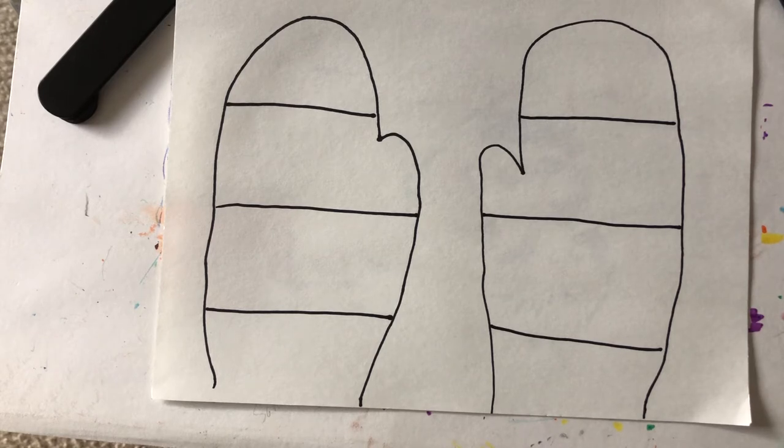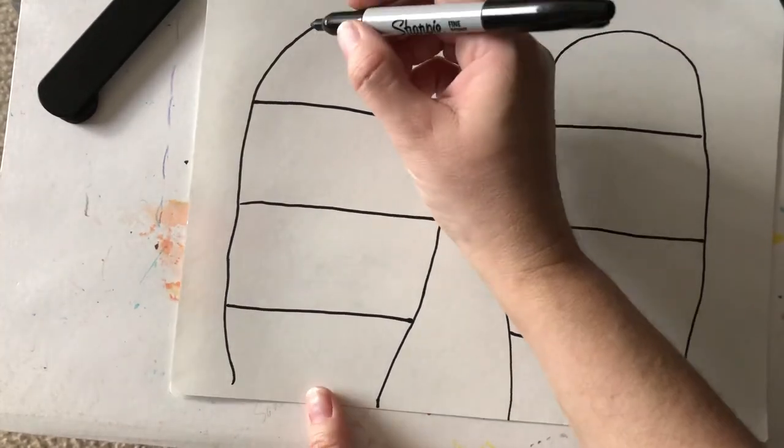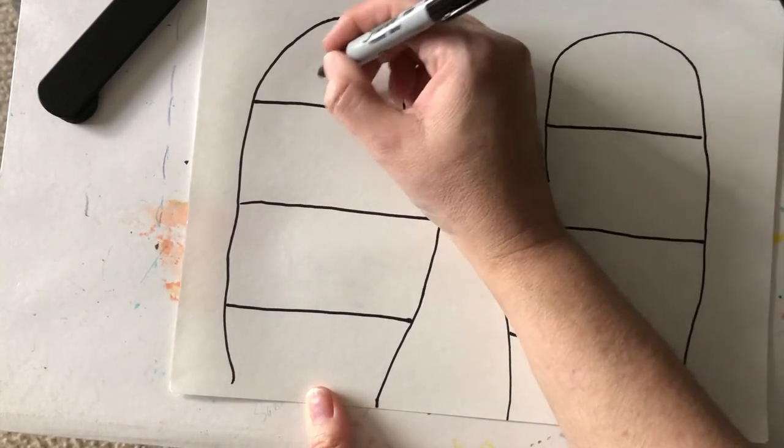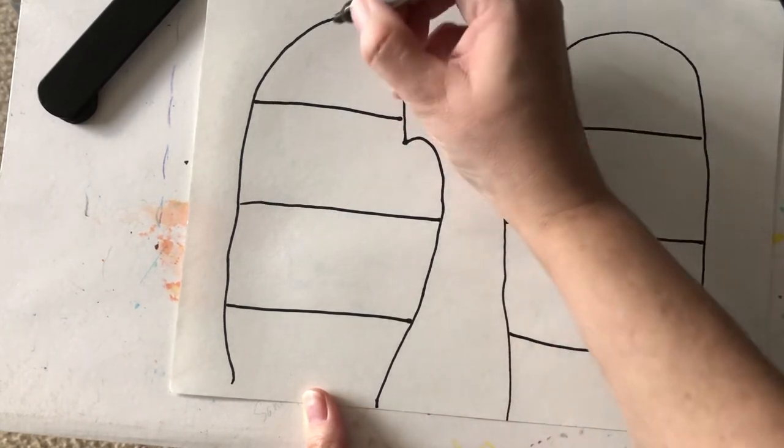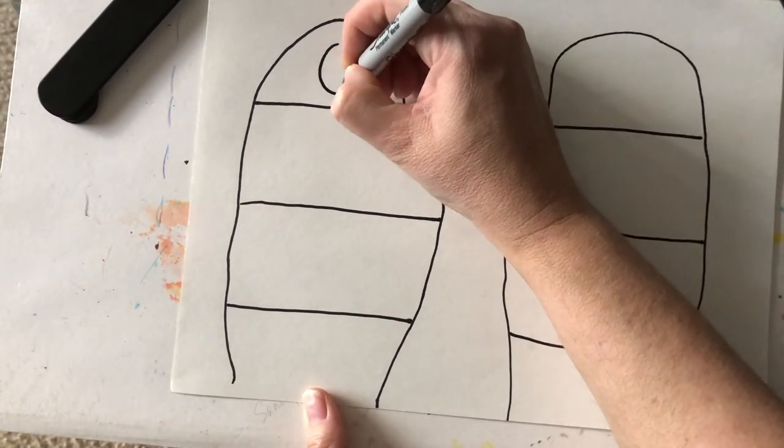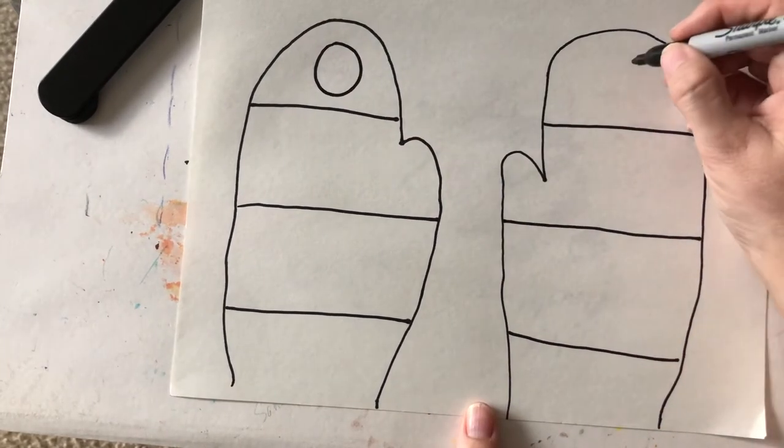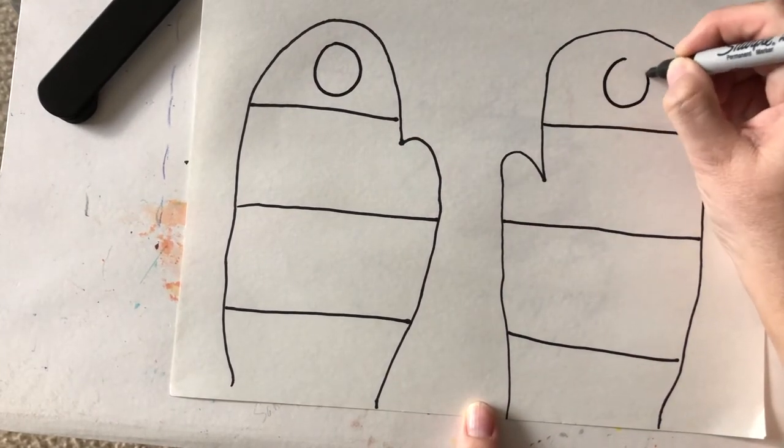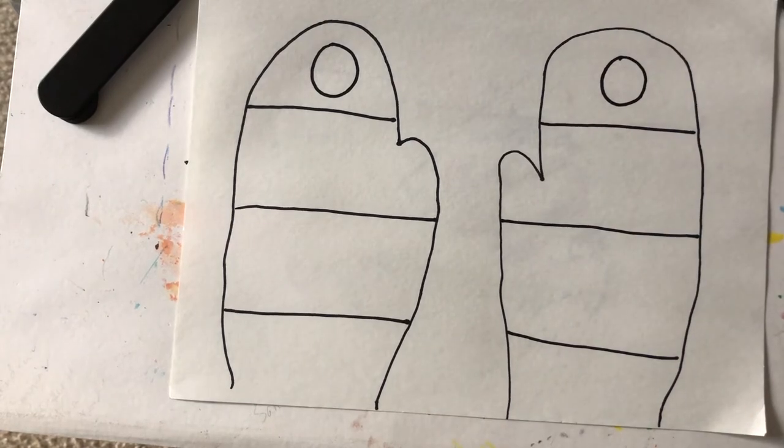So let's think about a shape that we could use. Think of one shape. It could be anything. Maybe it's triangles. Maybe it's circles. Maybe it's squares. It's up to you. We're going to practice drawing one of those shapes in the top area over here. Now I'm going to practice a circle and then I'm going to practice another circle over here.